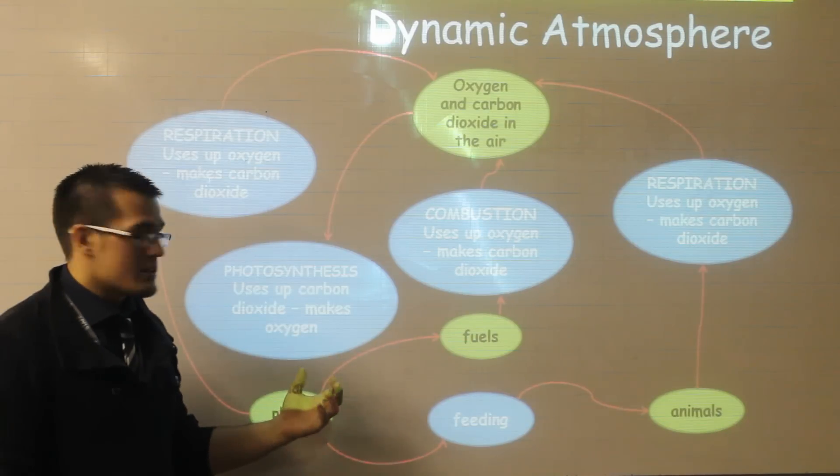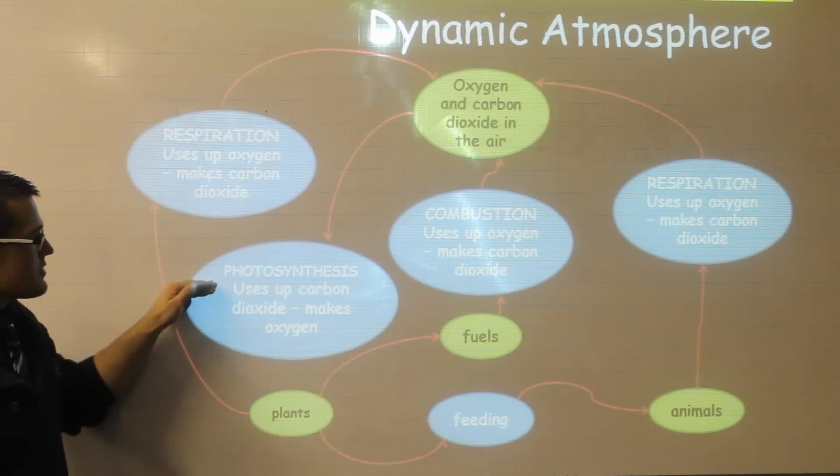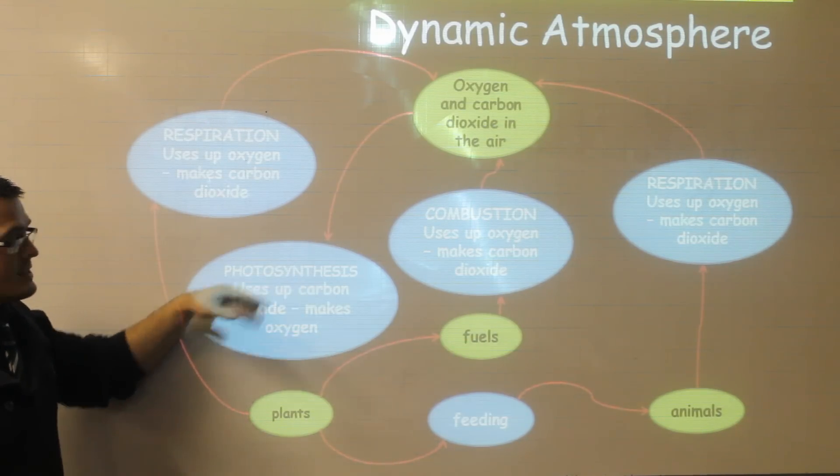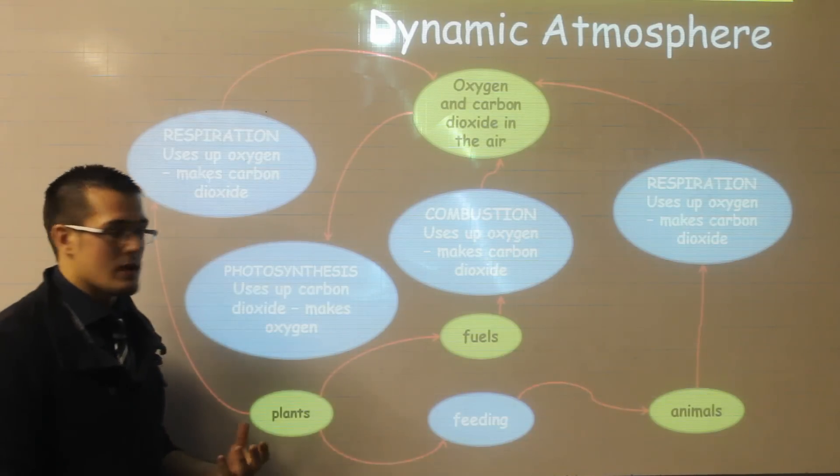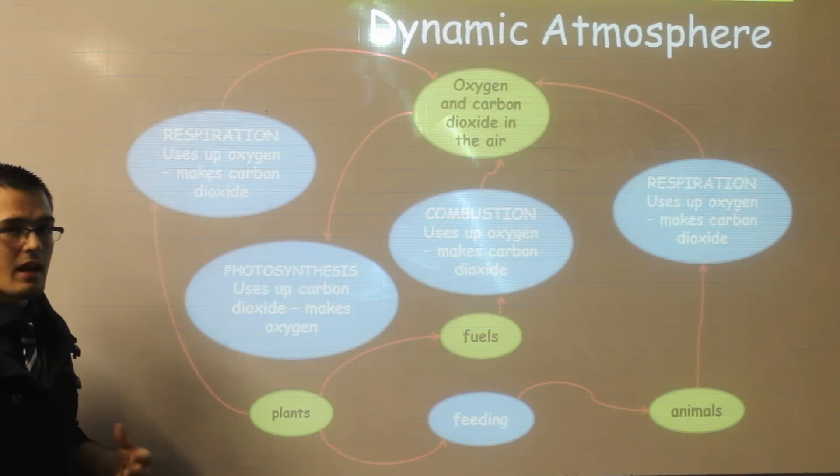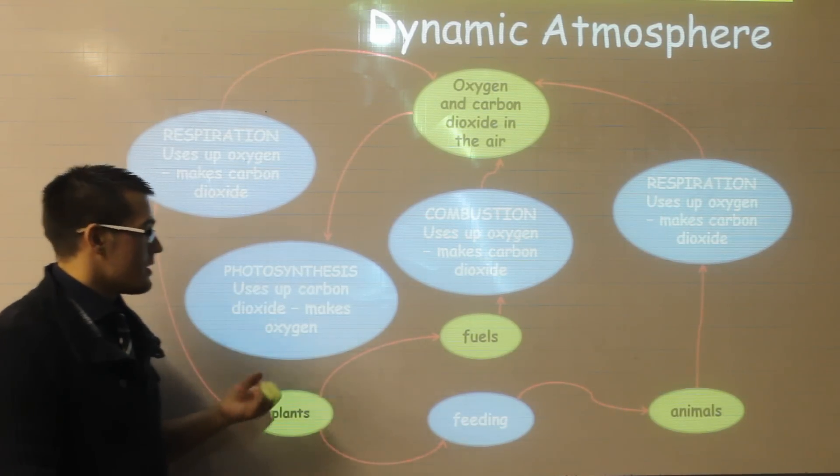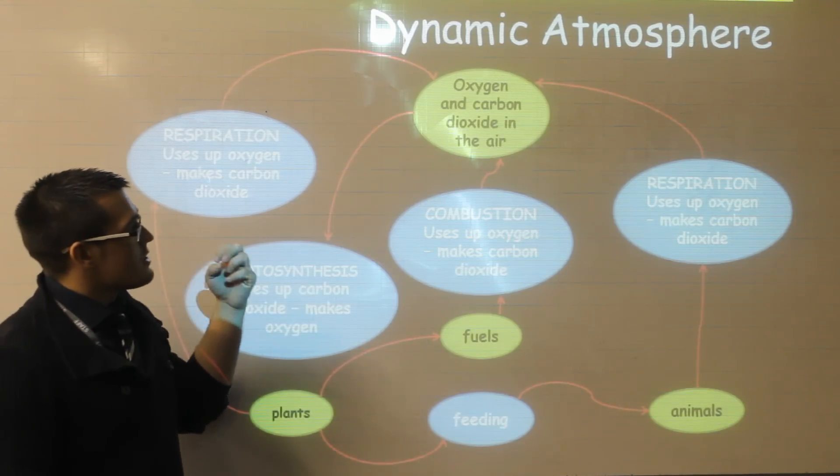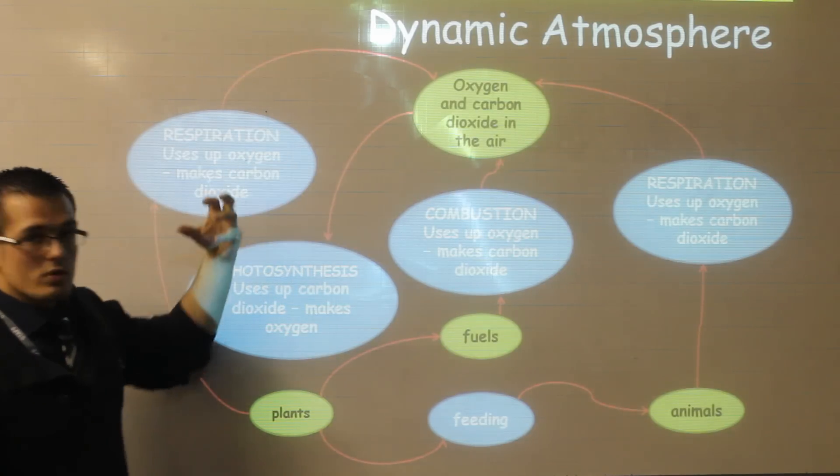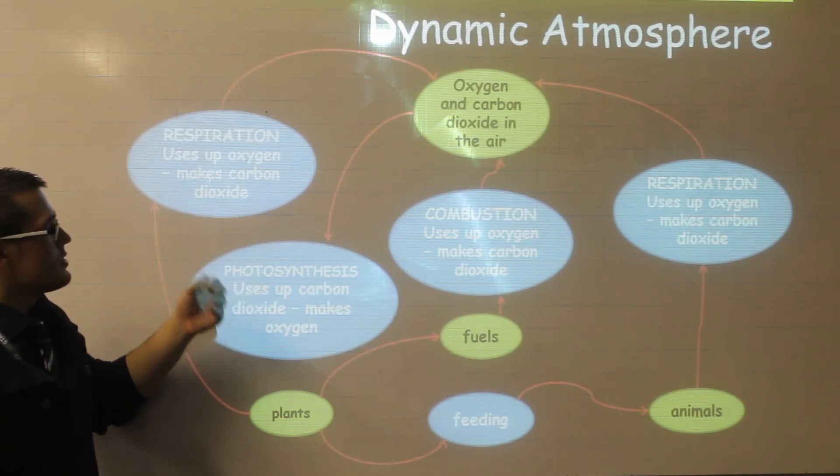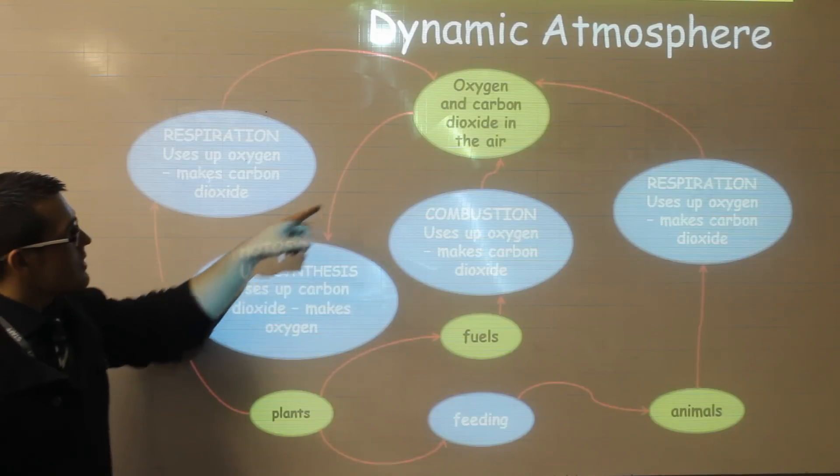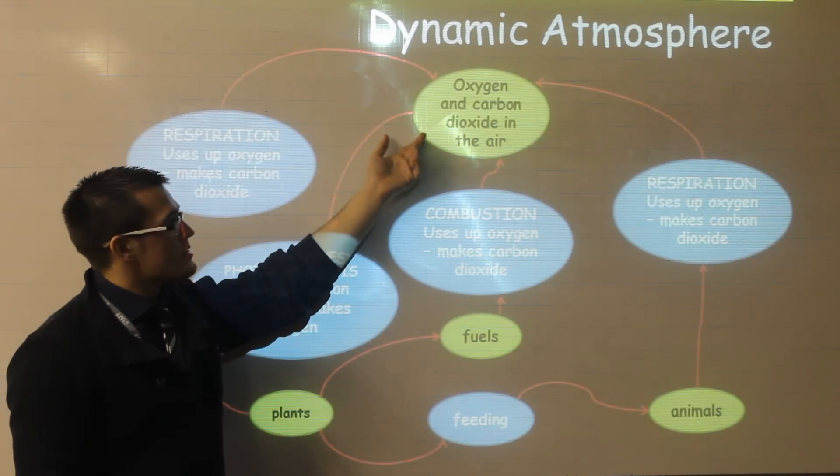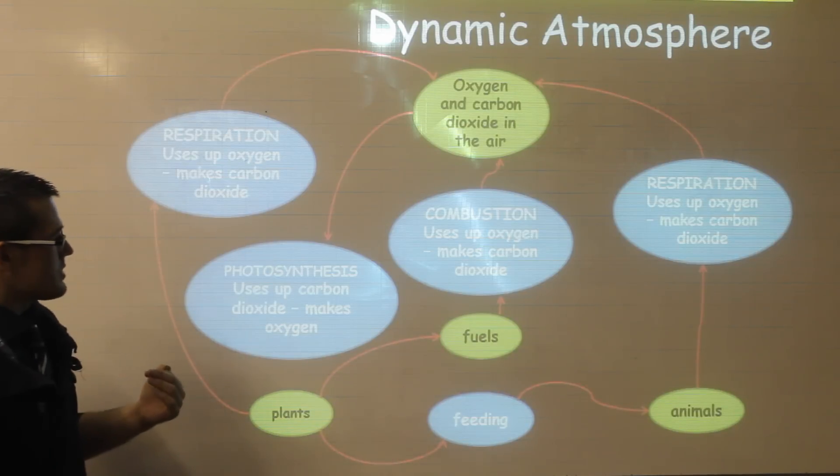The other important process that plants in particular will do is photosynthesis. Photo means light, synthesis means to create. So it is a method of creating the plant's food, i.e. glucose, by light. It uses that light energy to break apart carbon dioxide and water molecules and then form oxygen and glucose. So that will increase the amount of oxygen in the atmosphere and decrease the amount of carbon dioxide.